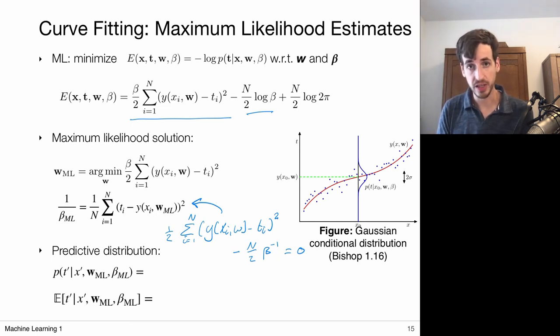So given our modeling choices, so we chose to model the data with a Gaussian distribution, we are able to obtain maximum likely estimates for this distribution that optimizes the likelihood of the data coming from a model with these parameters.